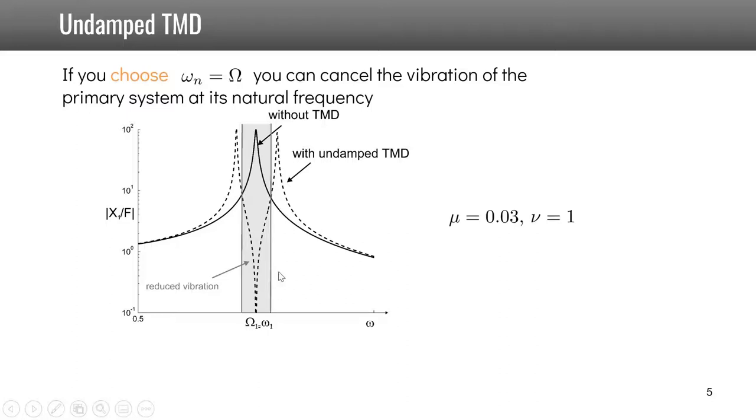When you add the undamped tuned mass damper, you see that you can cancel the vibration at this frequency, but because you are adding a second mass, you have now two resonances which are to the left and to the right of the primary system. This is an example where the mass ratio is 3% and the frequency ratio is equal to 1, which means the frequency of the TMD is the same as the frequency of the primary system.